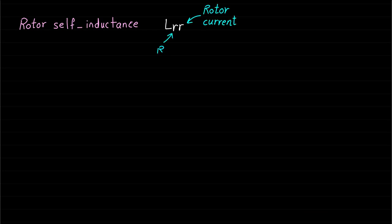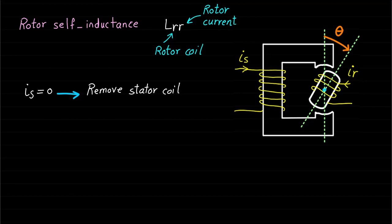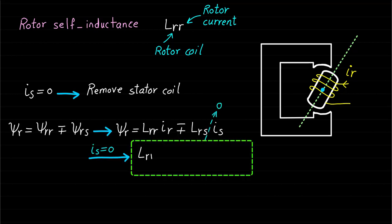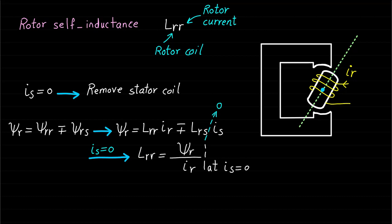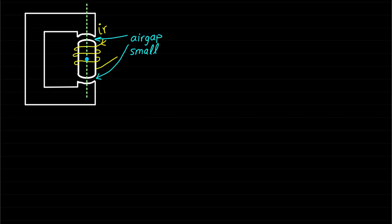Now let's move on to rotor self-inductance LRR. The rotor self-inductance represents the inductance of the magnetic field produced by the rotor excitation current IR only and links the rotor coil. The stator current IS is zero during the calculation of the rotor self-inductance, so we can remove the stator coil because it is not contributing to the rotor self-inductance. The rotor self-inductance can be calculated as: LRR equal to Psi-R over IR at IS equal to zero. Based on the geometry of this magnetic circuit, the rotor self-inductance changes with respect to rotor position because the air gap seen by the rotor magnetic field is changing. When the rotor is in vertical position, the air gap seen by the rotor magnetic field is small, reluctance is small, and therefore inductance is large.